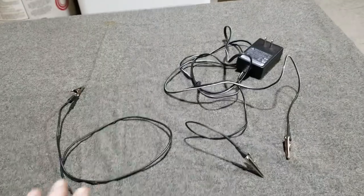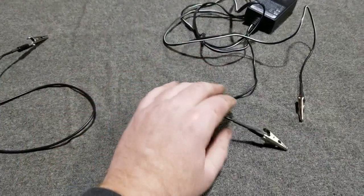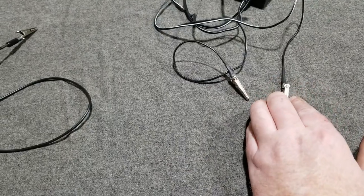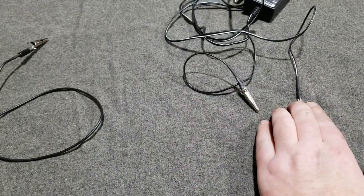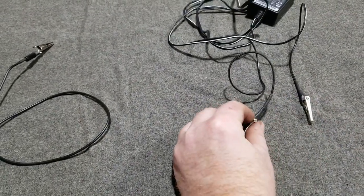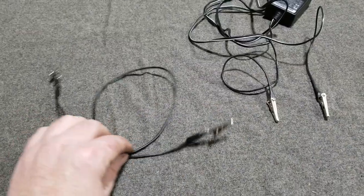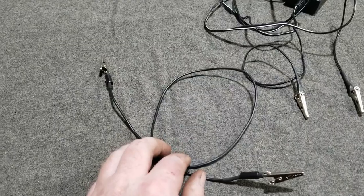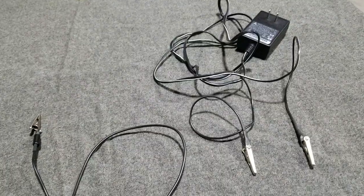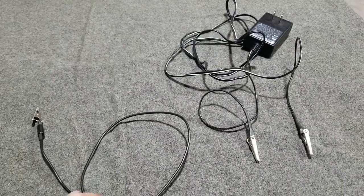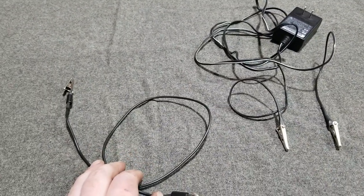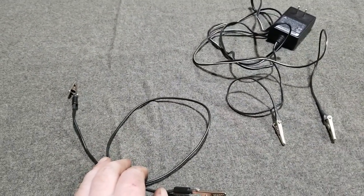All right, here we go. Here's the power supply. I got it all modified here. I got the alligator clips crimped on and nice heat shrink on there. Didn't have to do that, but I did it anyway. Then here's that jumper cable. Made that up too.